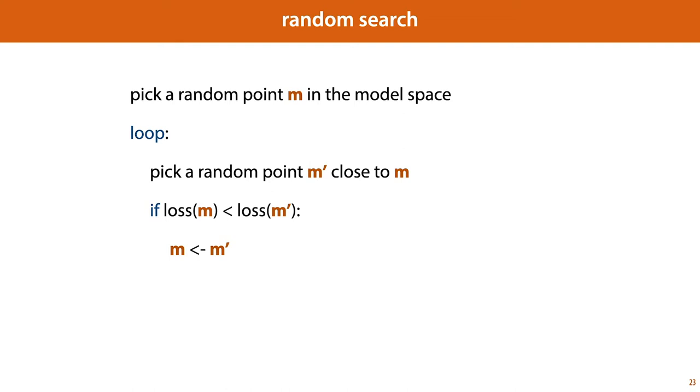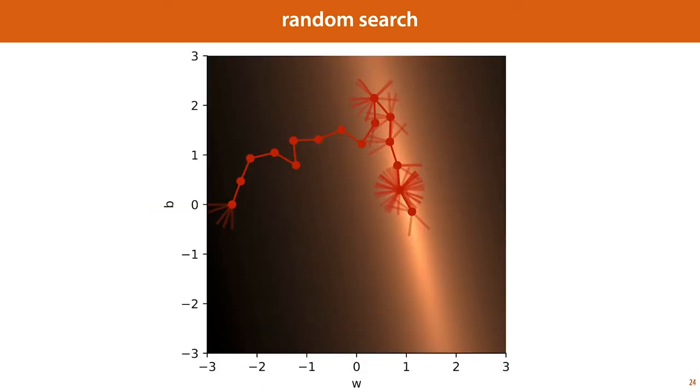Here's how random search was defined in the second lecture. We start with a random point m in the model space, we enter a loop, we pick another point m' close to the first, and if this new point has a lower loss than the old, then we switch to the new point, otherwise we stick with the one we had. And doing that, step by step, we can get closer and closer to parts of the model space that have low loss.